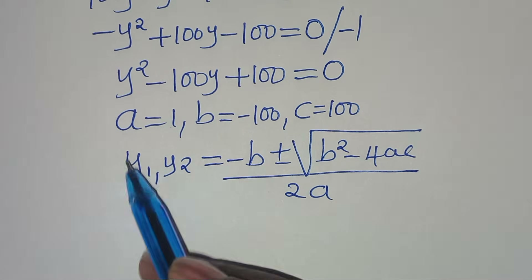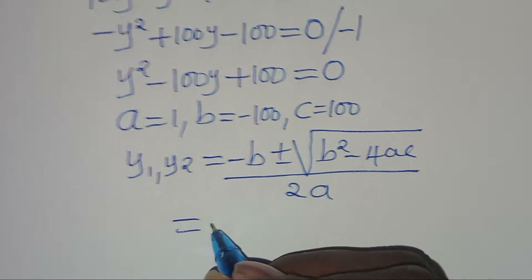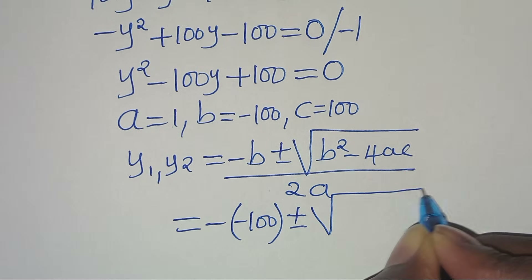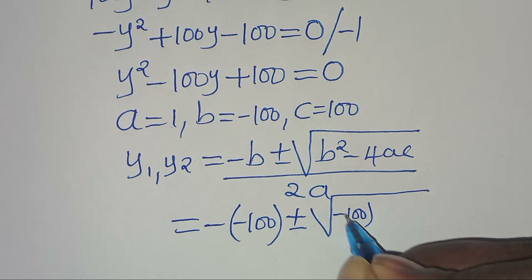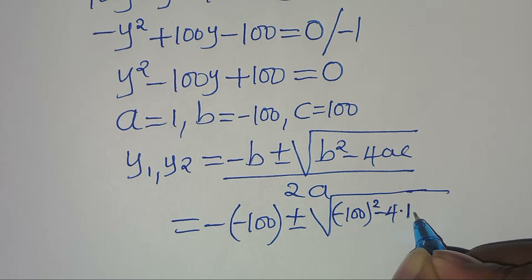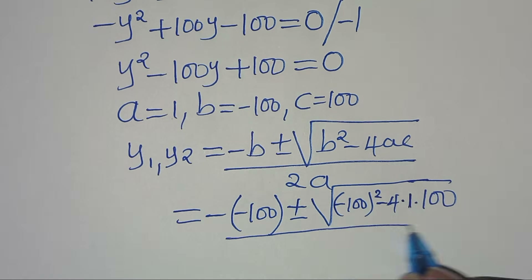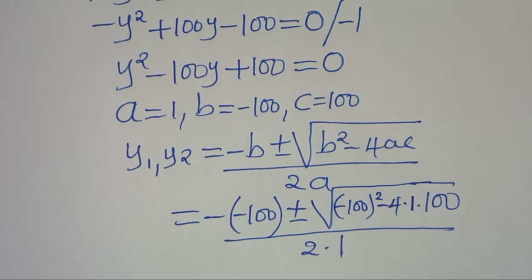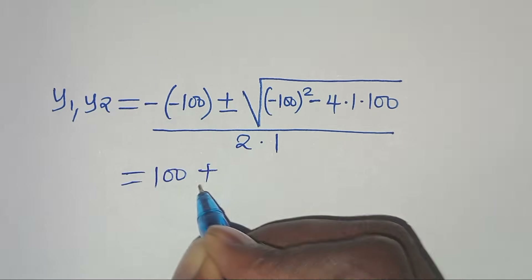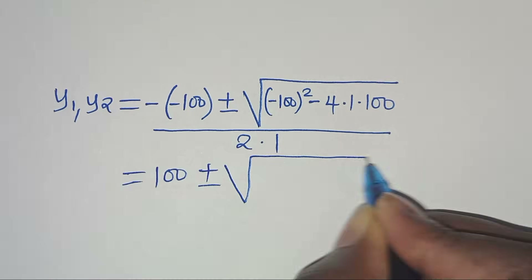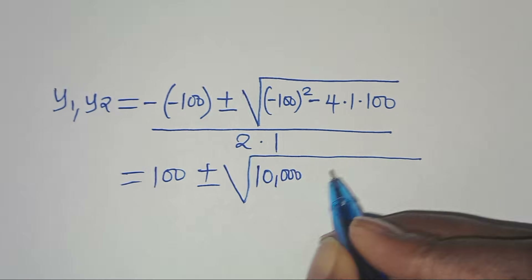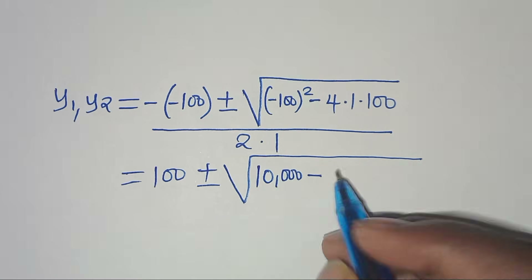Substituting the values of a, b, and c, we have: minus (minus 100) plus or minus the square root of (minus 100) squared minus 4 times 1 times 100, everything divided by 2 times 1. This gives 100 plus or minus the square root of 10,000 minus 400.